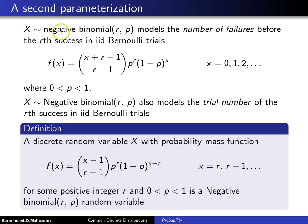If X is a negative binomial random variable with parameters r and p, and that's negative binomial with a small n, that models the number of failures before the rth success in iid, and iid stands for independent and identically distributed Bernoulli trials. In that case, the probability mass function looks just like this for a parameter r, which is a positive integer, and a parameter p, which is between 0 and 1.